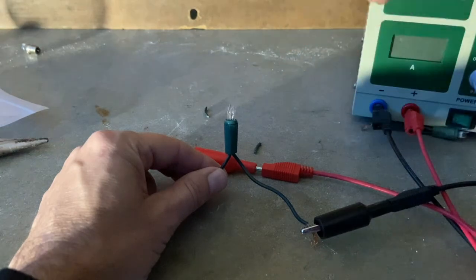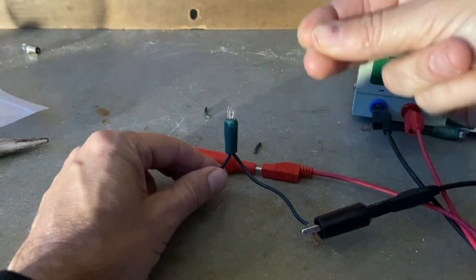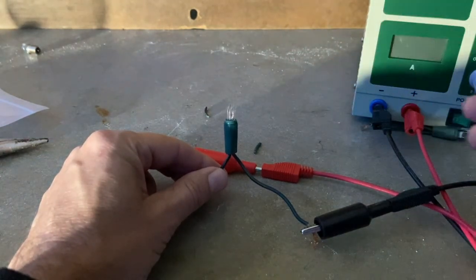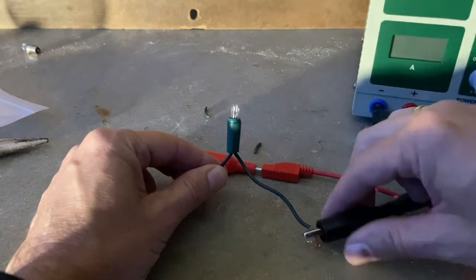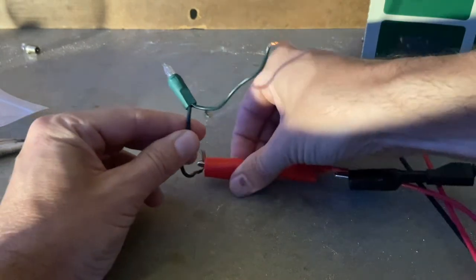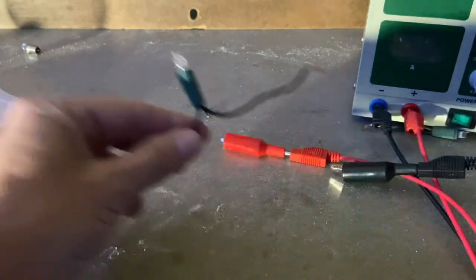So the filament, when it's exposed to oxygen, actually burns the filament. It's a very, very thin wire and the oxygen doesn't let it keep glowing. Okay, so that means the glass is there to keep the oxygen out.